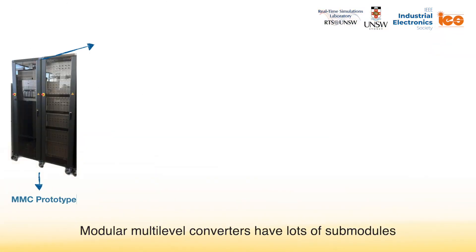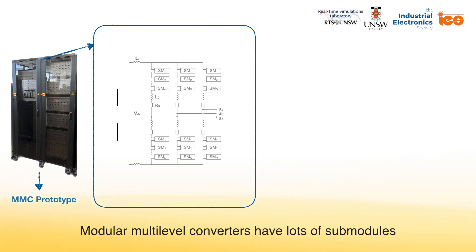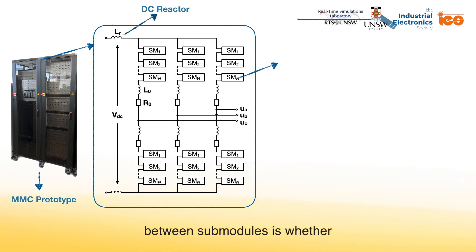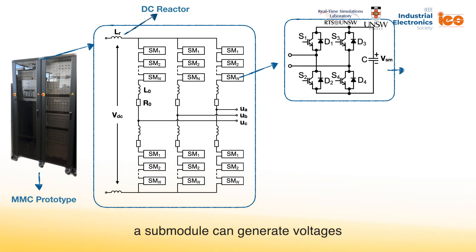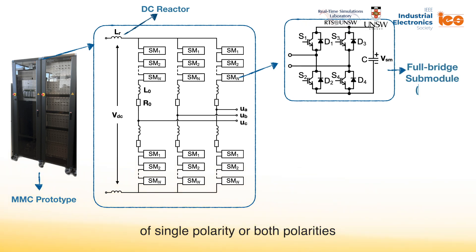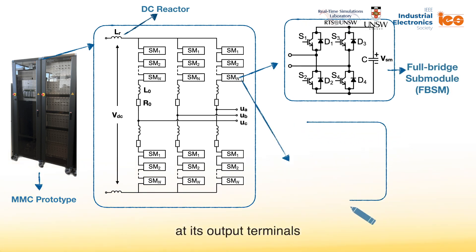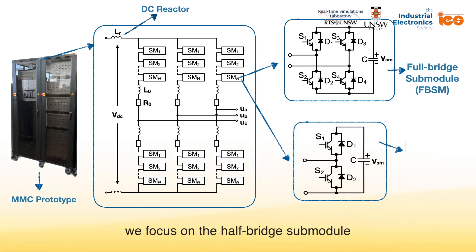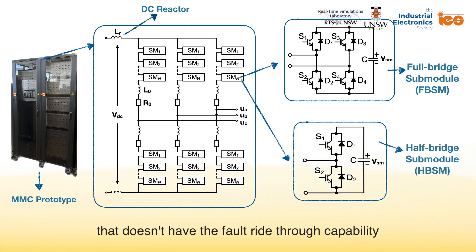Modular multi-level converters have lots of submodules. The main differentiating feature between submodules is whether a submodule can generate voltages of single polarity or both polarities at its output terminals. Here, we focus on the half-bridge submodule that doesn't have the fault ride-through capability.